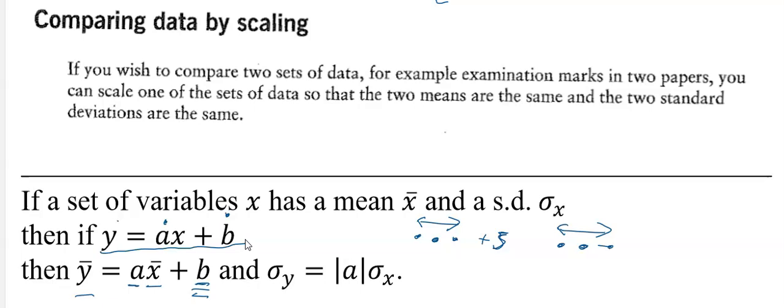If you take those same marks and multiply them by a number — say, multiplying by two — they become twice as spread out. That is why when you multiply by a, the standard deviation also gets multiplied by a.